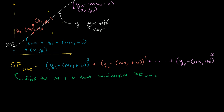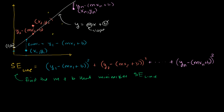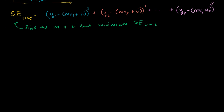In the last video, we showed that the squared error between some line, y equals mx plus b, and each of these data points is this expression right over here. In this video, I'm going to algebraically manipulate this expression so it's ready for the calculus stage, so that we can actually find the m and b values that minimize this value. This is just going to be a ton of algebraic manipulation, but I'll try to color code it well so we don't get lost in the math.